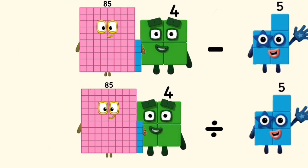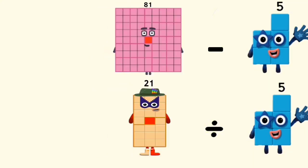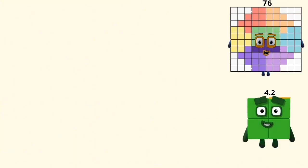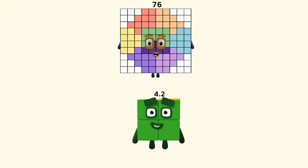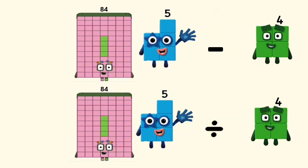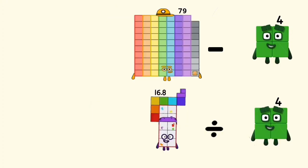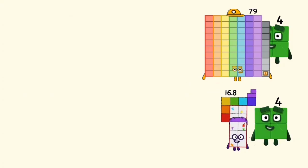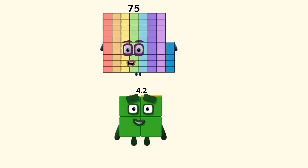84 minus and divided by 5 equals 79 and 16.8. 79 minus 4 and 16.8 divided by 4 equals 75 and 4.2.